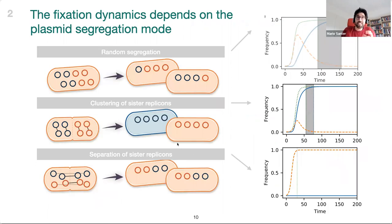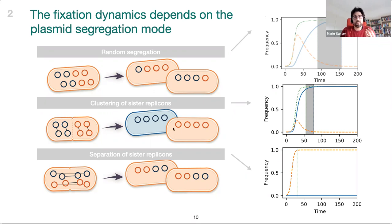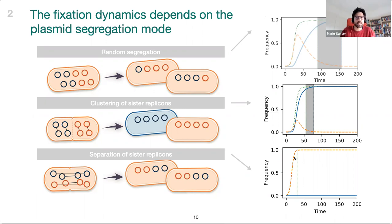One should keep in mind — as mentioned in the first part — we assume random segregation of plasmid copies to daughter cells, and the fixation dynamics depend strongly on the plasmid segregation mode. In our model, we look at clustering of sister replicons where the plasmid does not resolve before going to daughter cells; this reduces both phenotype and genotype fixation times and also the heterozygosity window. Whereas, if we have separation of sister replicons — as often assumed for low-copy plasmids, where plasmid copies are pushed to the two daughter cells — we only see a rise of heterozygous cells up to fixation.